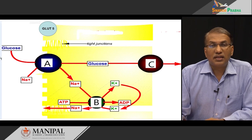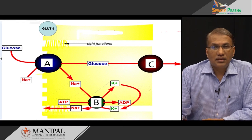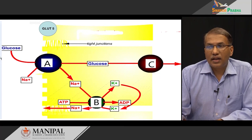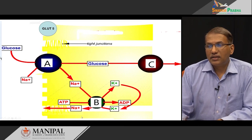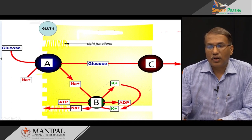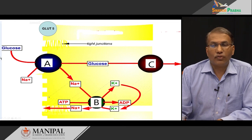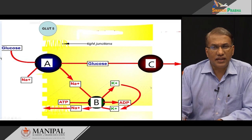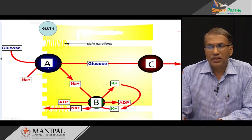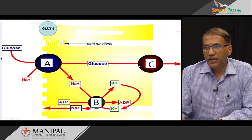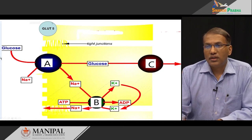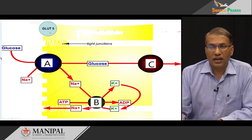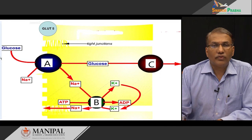Now let us learn about the transporters that influence the rate of absorption. In this diagram, the yellow color represents the intestinal epithelial cell. It has a luminal side with multiple folds representing the villi, and the opposite relatively straight side is called the contraluminal side. You can see three transporters A, B, and C, along with GLUT5 — five transporters in total. Let us understand how they influence the rate of absorption.